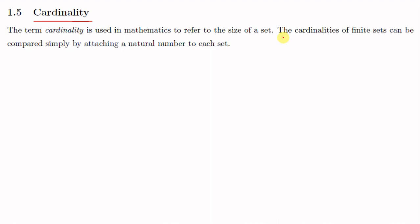Suppose you have two finite sets A and B. If A has size 5 and B has size 7, then we have natural number 5 associated with A and natural number 7 associated with B. In this section we will be discussing the cardinality of infinite sets, or how we can compare the cardinalities of two infinite sets.